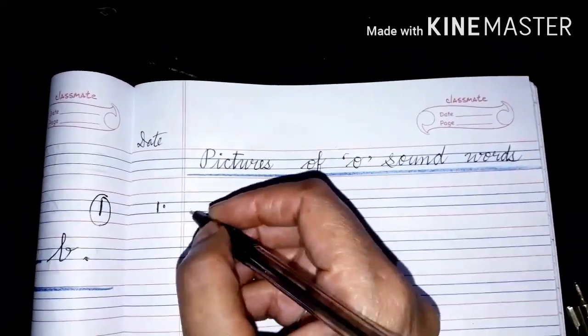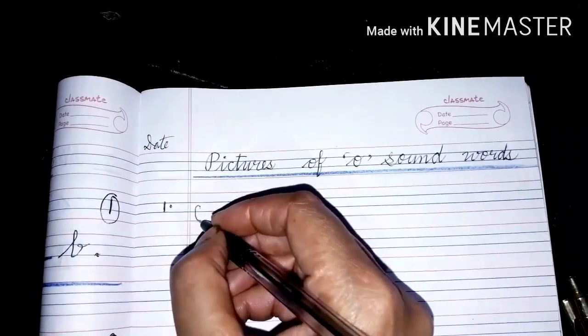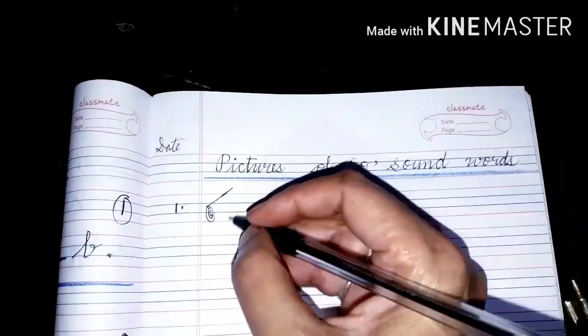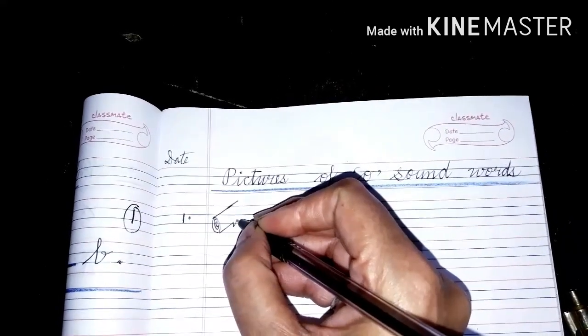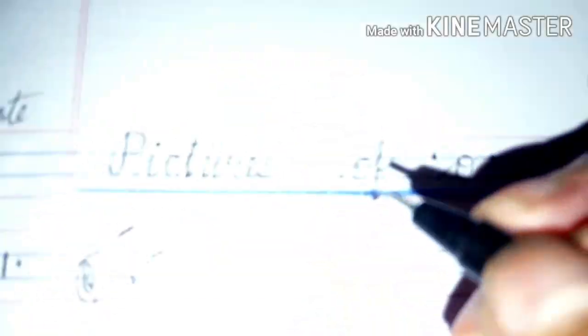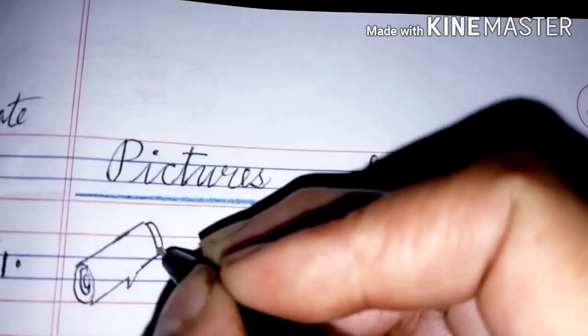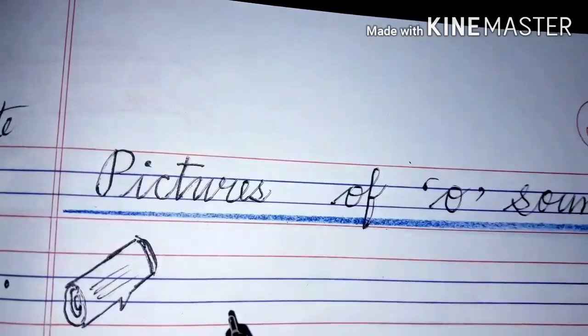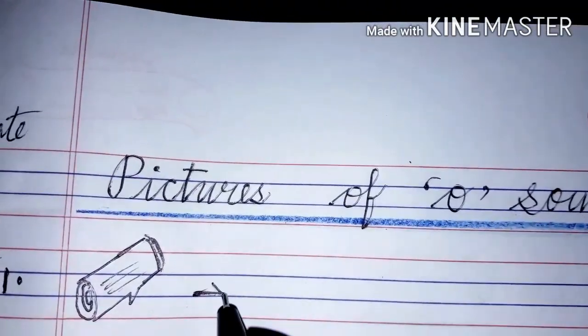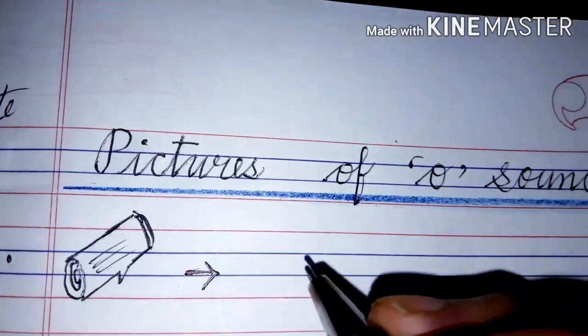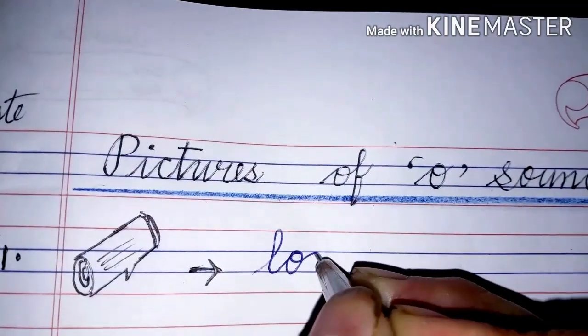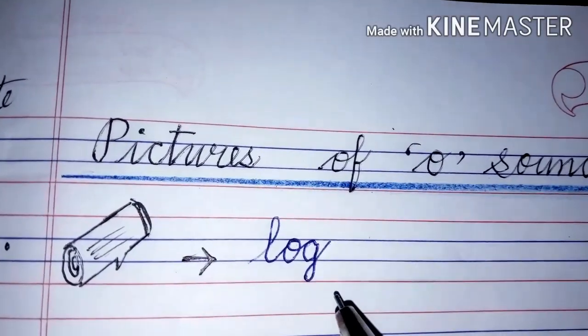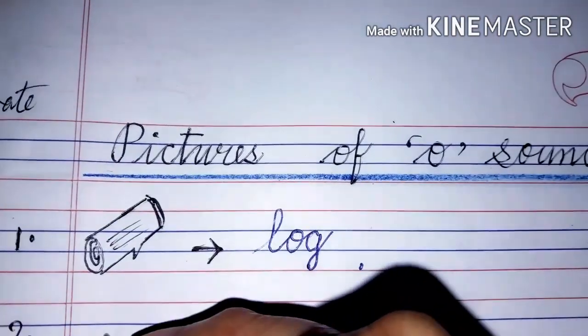Children, here you have to draw a picture. First, make an oval shape, make few rings inside, then a slanting line, one more slanting line like this. This is a log. Log is a piece of wood. Put an arrow and write here: L-O-G, log. L-O-G, log.